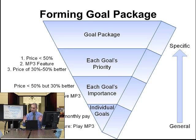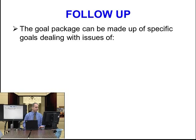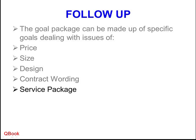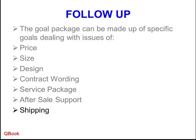Our goal package is totally subjective, but it helps us when we go negotiating to be much more objective about what we need, rather than just getting tired out. The goal package is made up of specific goals dealing with issues like price, size — product size or lot size — design, contracts, service packaging, after-sale support, shipping issues, quality issues, and many other issues. The things we often think about are price, timing, shipping, and design, but there are many others.